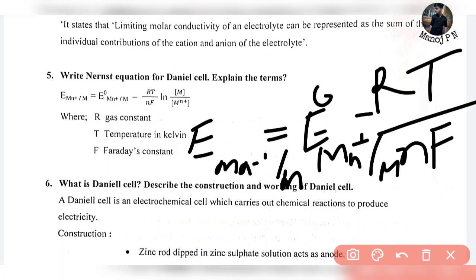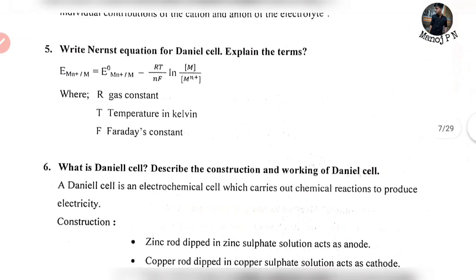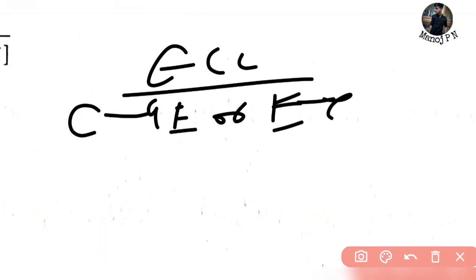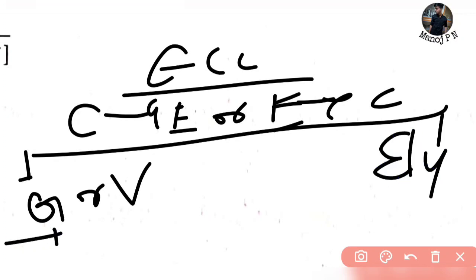The next question is: what is the Daniel cell? Describe the construction and working of the Daniel cell. This is a very important question. The Daniel cell is derived from electrochemical cells. Electrochemical cells convert chemical energy to electrical energy and vice versa. The galvanic or voltaic cell converts chemical energy to electrical energy, and the electrolytic cell converts electrical energy to chemical energy. The Daniel cell is an example of a galvanic or voltaic cell.